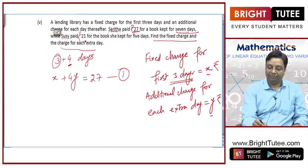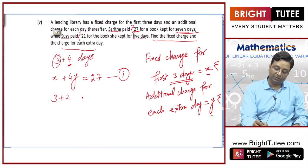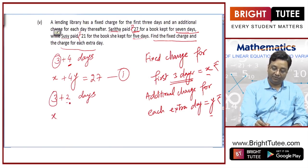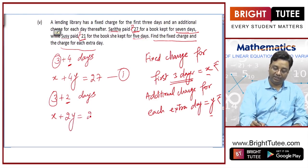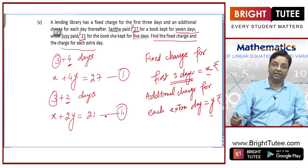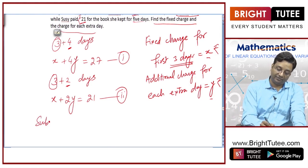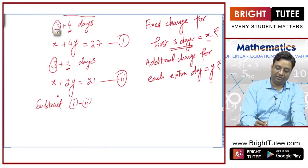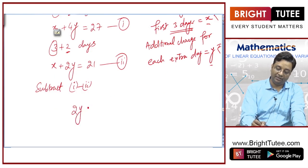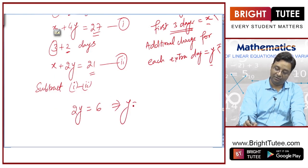For 7 days, broken into 3 plus 4 days: for the first 3 days she pays x rupees, and for the additional 4 days she pays 4y rupees, totalling 27 rupees — this is my first equation. Susie kept the book for 5 days, that is 3 plus 2 days: for the first 3 days she paid x, and for the additional 2 days she paid 2y, totalling 21 rupees — this is my second equation. Subtracting: x gets eliminated, 4y minus 2y gives 2y, and 27 minus 21 gives 6, hence y is equal to 3.